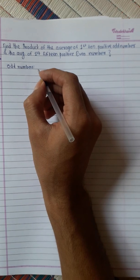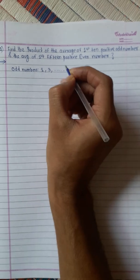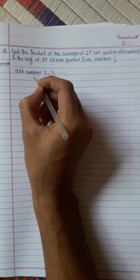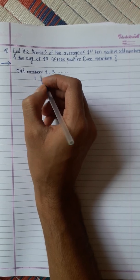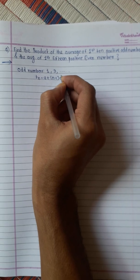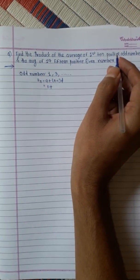As we know that odd numbers start from 1, 3, like this. Therefore, we will use the arithmetic progression to find t_n equals a plus (n minus 1)d. The first number is 1 plus the first 10 numbers.